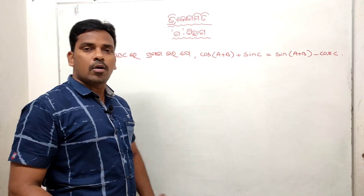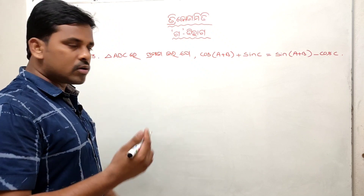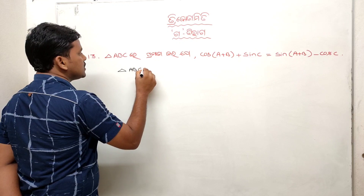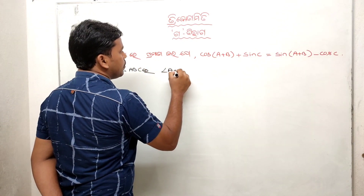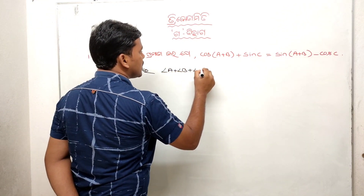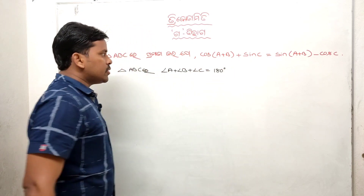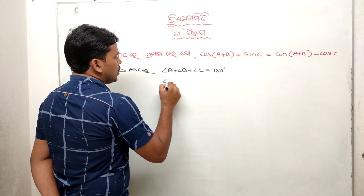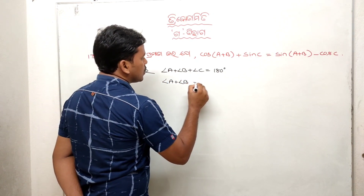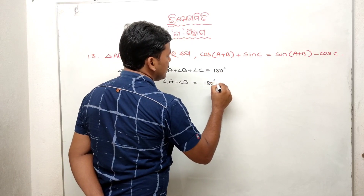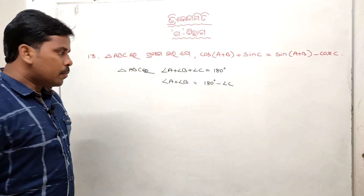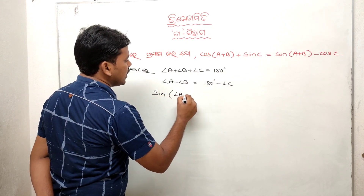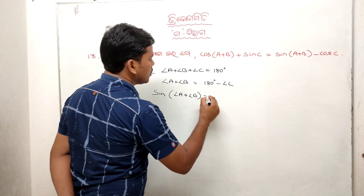In triangle ABC, we know that angle A plus angle B plus angle C equals 180 degrees. So angle A plus angle B equals 180 degrees minus angle C. Applying sin to both sides, sin(A plus B) equals sin(180 minus C).